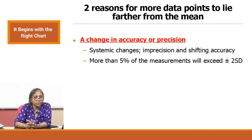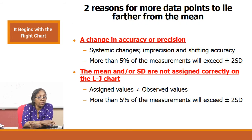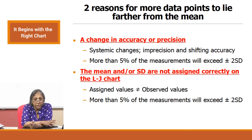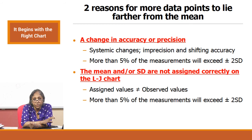If it goes beyond plus or minus 2 SD and you see more than 5 percent, what could be the reasons? Apart from a problem in your analytical system, the problem could be that the mean and/or SD are not assigned correctly on the LJ chart. This is one problem seen in many labs — the laboratory assigns values based on the QC package insert.